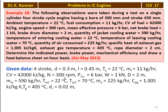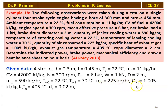Given data: four-stroke cycle engine, diameter 0.3 meter, stroke length 0.45 meter, ambient temperature 22 degree Celsius, mass of fuel 11 kilograms per hour, calorific value 42,000 kilojoules per kilogram, speed N equal to 300 RPM, indicated mean effective pressure 6 bar, load 1 kilo Newton, brake drum diameter 2 meter, mass of water 590 kilograms per hour, inlet water temperature 22 degree Celsius, outlet water temperature 70 degree Celsius, mass of air 225 kilograms per hour, specific heat of gas 1.005 kilojoules per kilogram Kelvin, gas temperature 405 degree Celsius, rope diameter 0.02 meter.